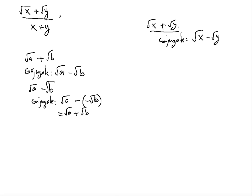So in this case, the conjugate of (√x + √y) will be (√x − √y). We multiply both the numerator and denominator by the conjugate (√x − √y). As a result, notice the middle terms go away using the FOIL method — those two terms interchange and become zero.